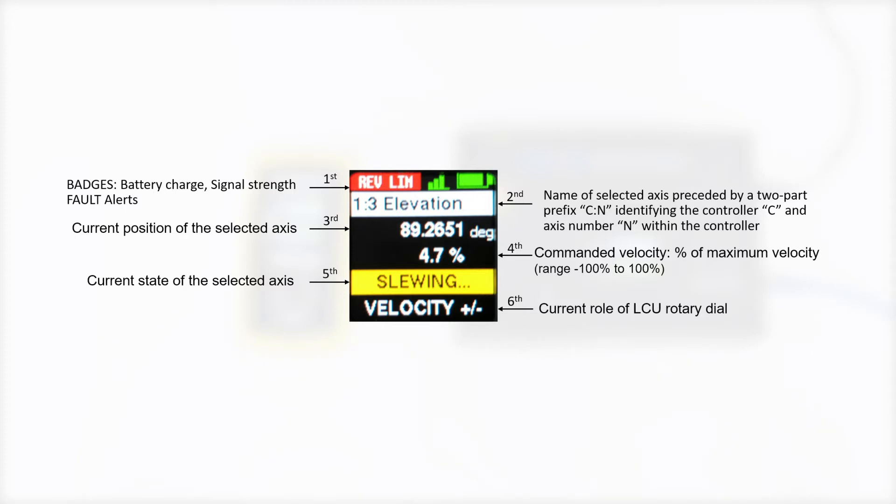The name of the access is preceded by a two-part prefix. The first digit identifies the controller on the network. The second digit identifies the access slot within that controller. The next line shows the current position of the selected access.